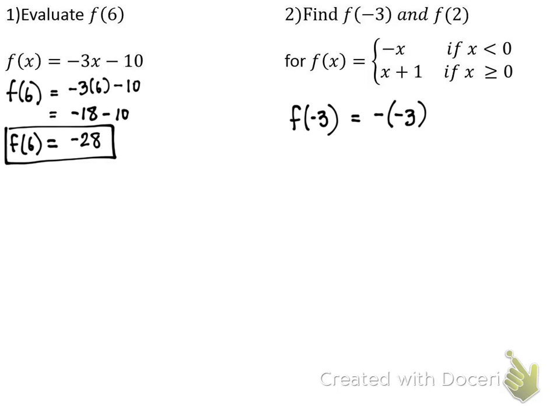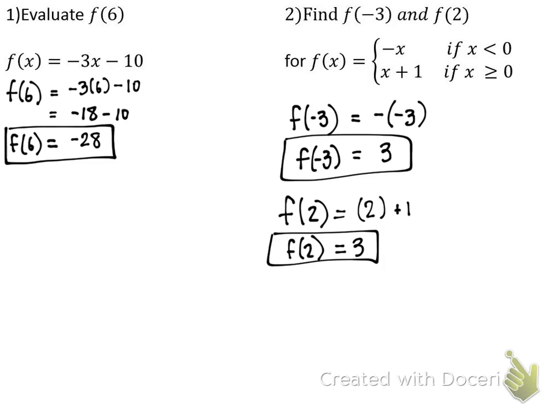So f of negative three equals negative negative three. What's negative negative three? Positive three. So whenever I put the ingredient of negative three into this math machine, it gets filtered through the first equation because it's less than zero, and we get three as the output. Now if I put in two — two is greater than or equal to zero, so we use the different equation. F of two equals two plus one, which is also three. Different ingredients, but the same answer — that happens sometimes.